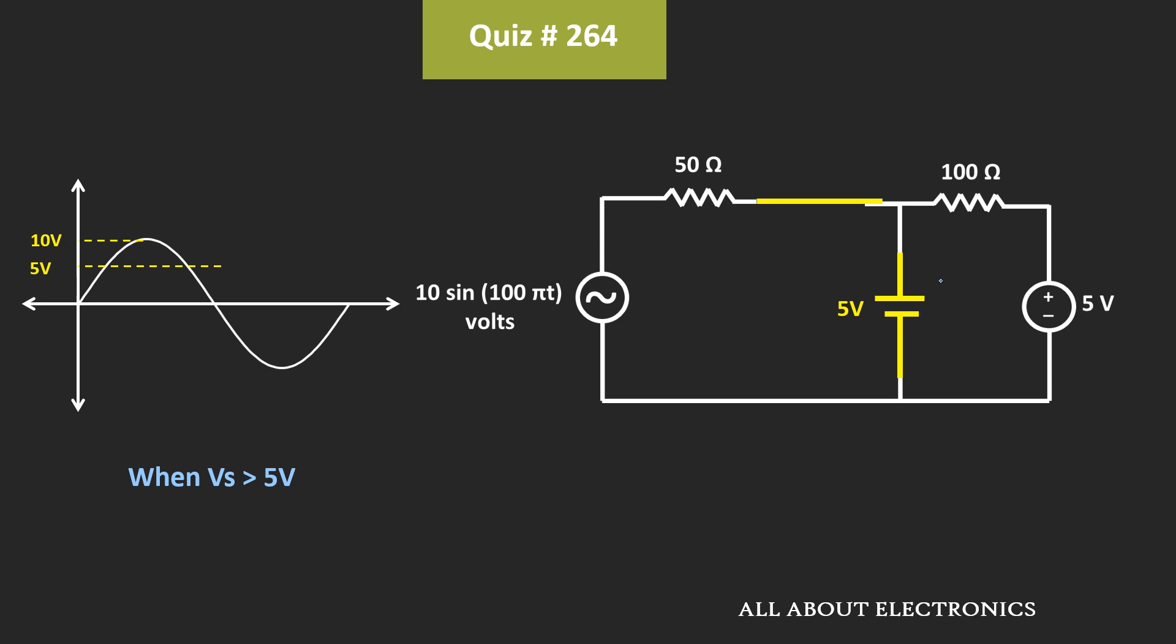So in this case, if you see, the voltage at both ends of this 100 ohm resistor is equal to 5V. That means no current will flow through this 100 ohm resistor. That means during the entire cycle, no current is flowing through the 100 ohm resistor, or we can say that the power which is getting dissipated across the 100 ohm resistor is equal to 0.